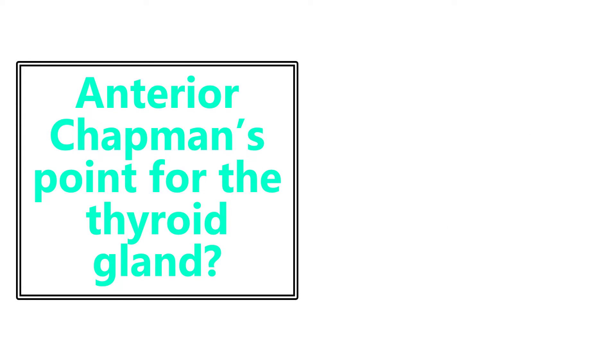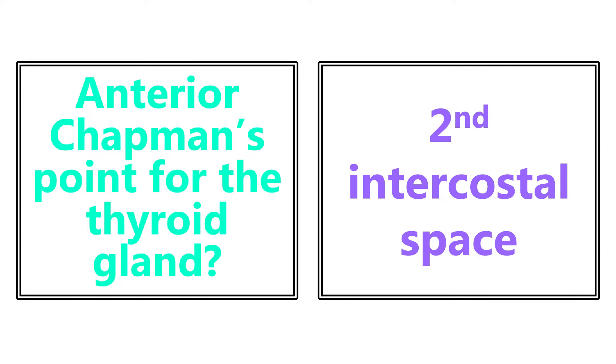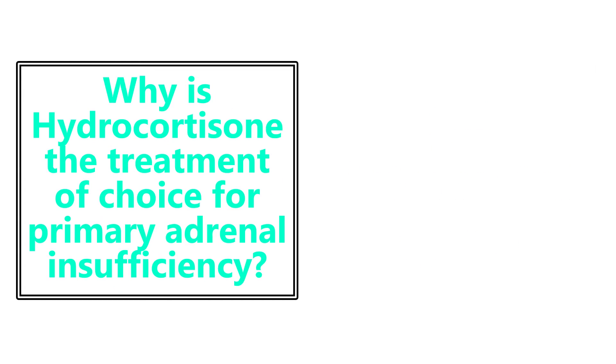Anterior Chapman's point for the thyroid gland is going to be the second intercostal space. You need to know these.